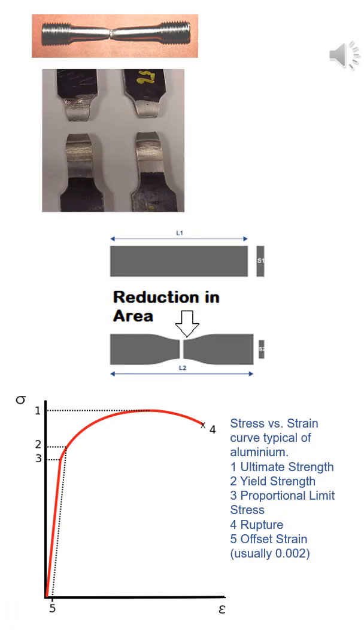A tension test measures how a metal behaves under stretching forces. It provides key mechanical properties, including elastic limit, the point where the material stops returning to its original shape.